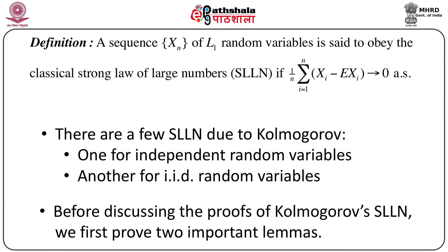Our main objective is to discuss the strong law of large numbers, mainly due to Kolmogorov, but before doing that we need a few important lemmas from real analysis and from probability theory. A sequence of random variables, all L1 random variables, is said to obey the classical strong law of large numbers — abbreviated SLLN, just as the weak law is called WLLN — if (1/n) times the summation from i=1 to n of (X_i minus E[X_i]) converges to 0 almost surely.